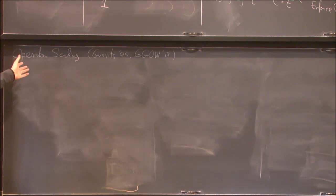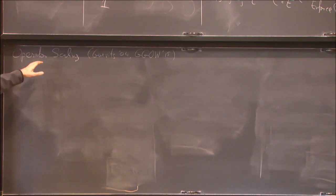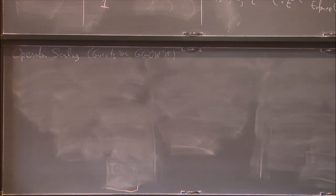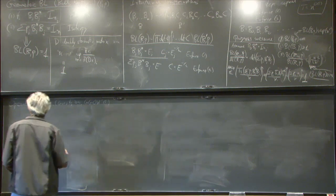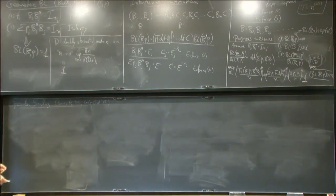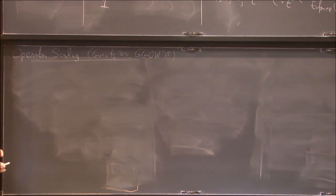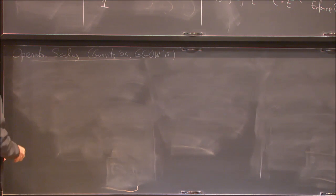Now I want to return to the analysis. Rather than proving the exponential bound directly, which is messy, there's a much more elegant way: reduce the Brascamp-Lieb problem to another problem called operator scaling, which I haven't described yet. That problem was introduced by Gurwitz, and we found a polynomial time algorithm for it about a year ago. Operator scaling is actually more general — the Brascamp-Lieb questions can all be asked in this framework.